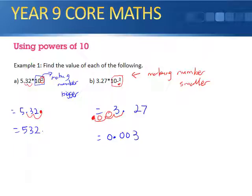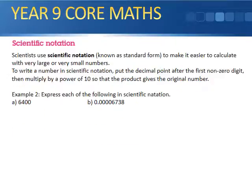Scientific notation: when scientists use scientific notation on very large or very small numbers, it's also known as standard form. They do this because we can actually calculate things. To write a number in scientific notation, put the decimal point after the first non-zero digit, then multiply by the power of 10 so that the product gives the original number.